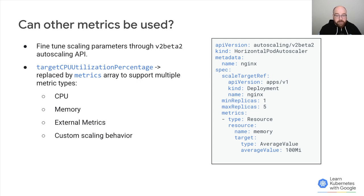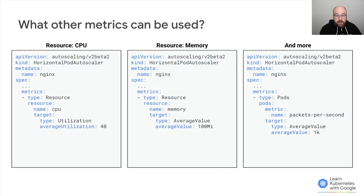In the v2 beta versions of the API — v2beta1 and v2beta2 — the targetCPUUtilizationPercentage has been replaced by the generic keyword metrics. It supports additional metric types along with supporting scaling by multiple metrics at the same time. Here we have a few examples of different metrics that can now be used to autoscale your application. You can see some expected ones like CPU and memory, but there's also a new type called pods and an additional type that will all be covered in future videos.